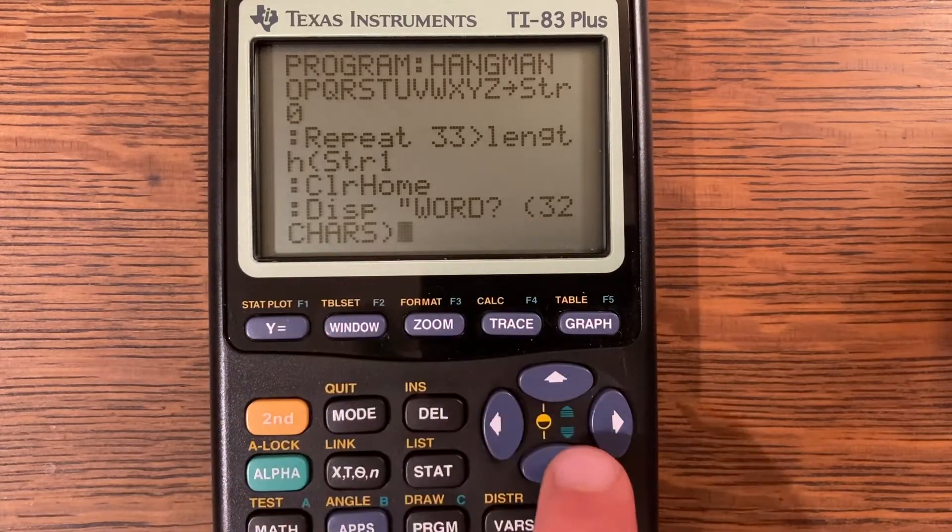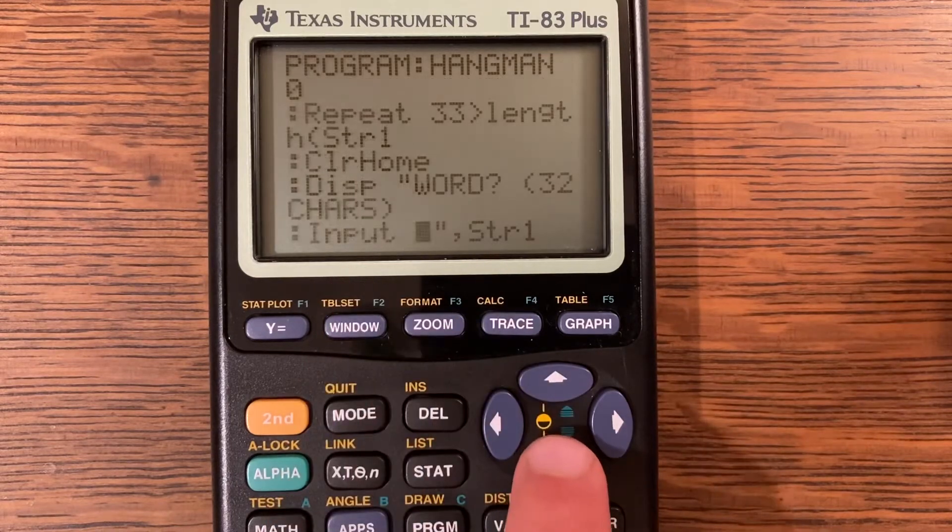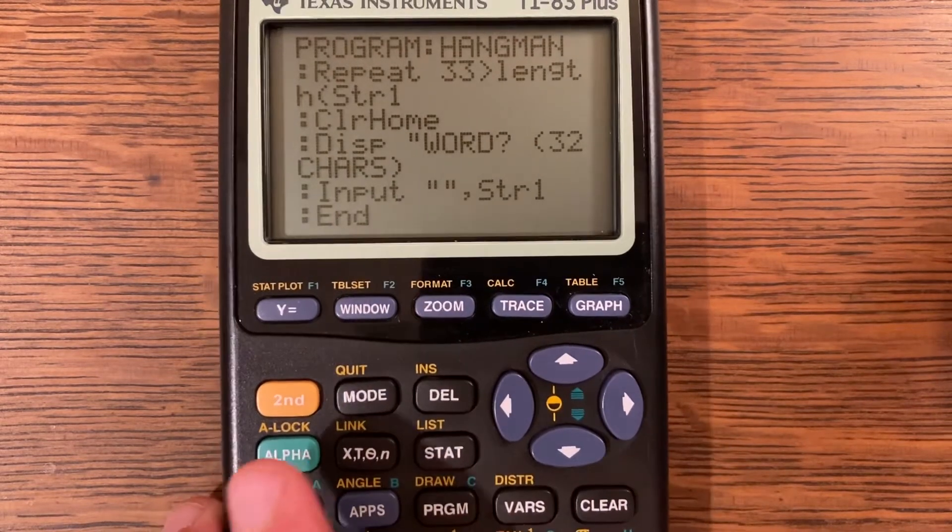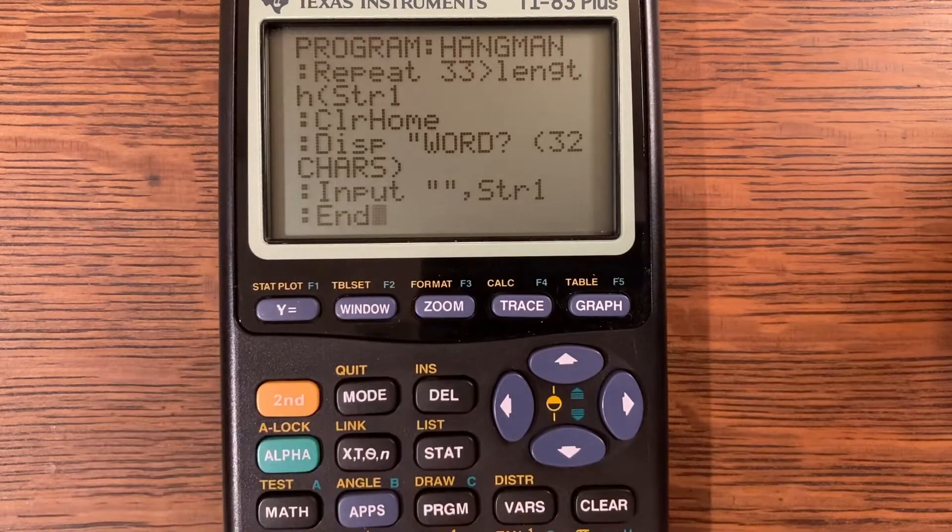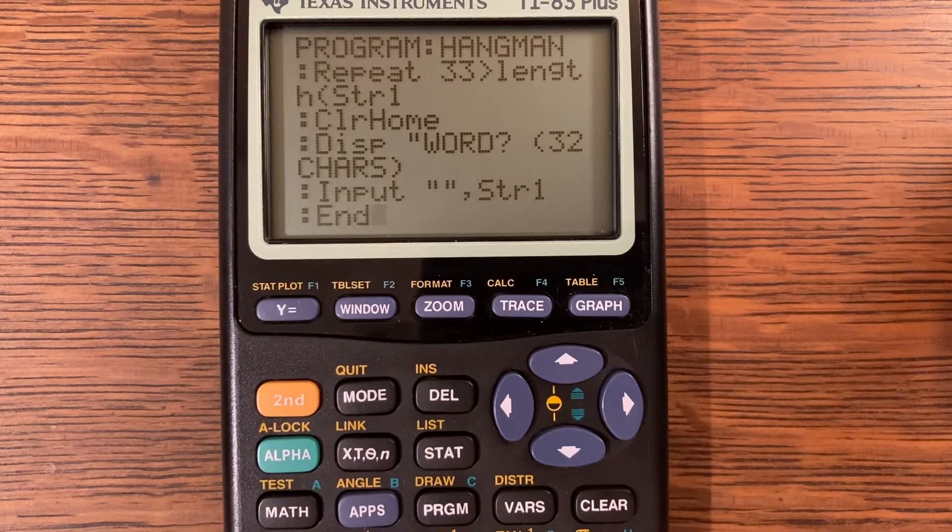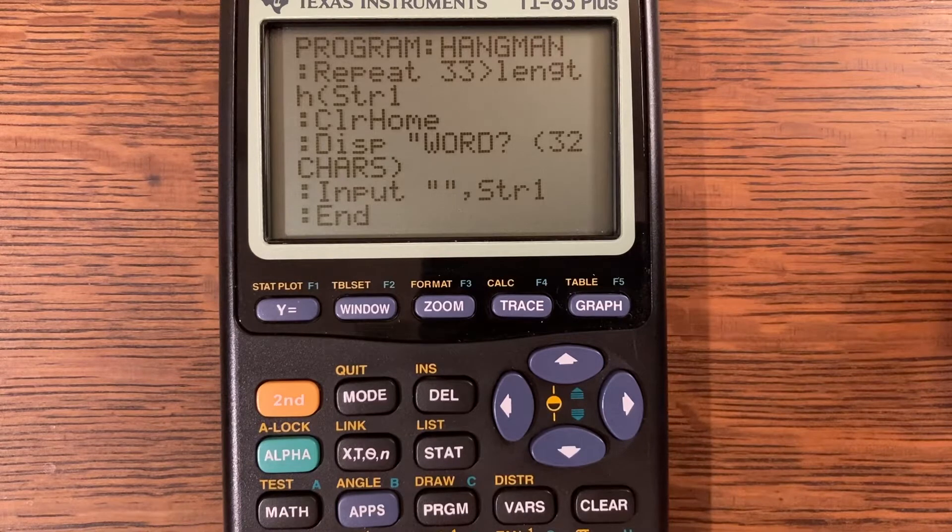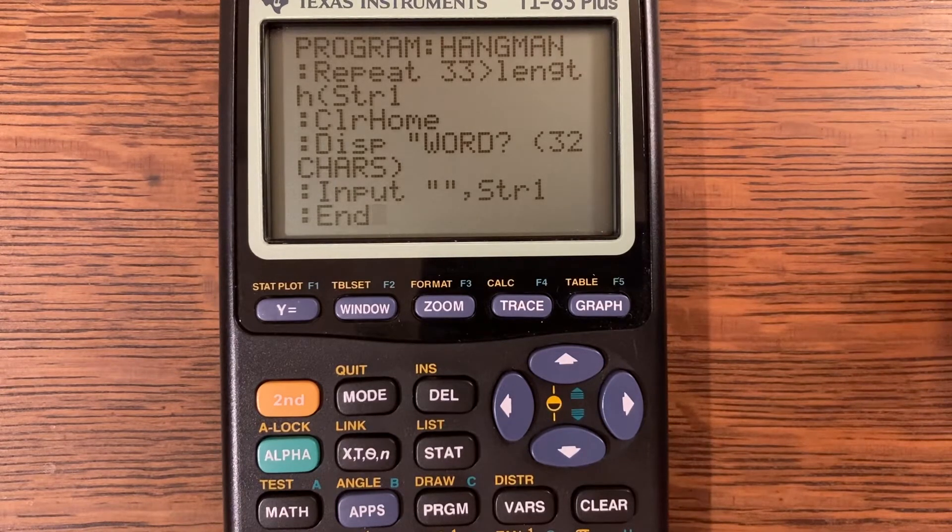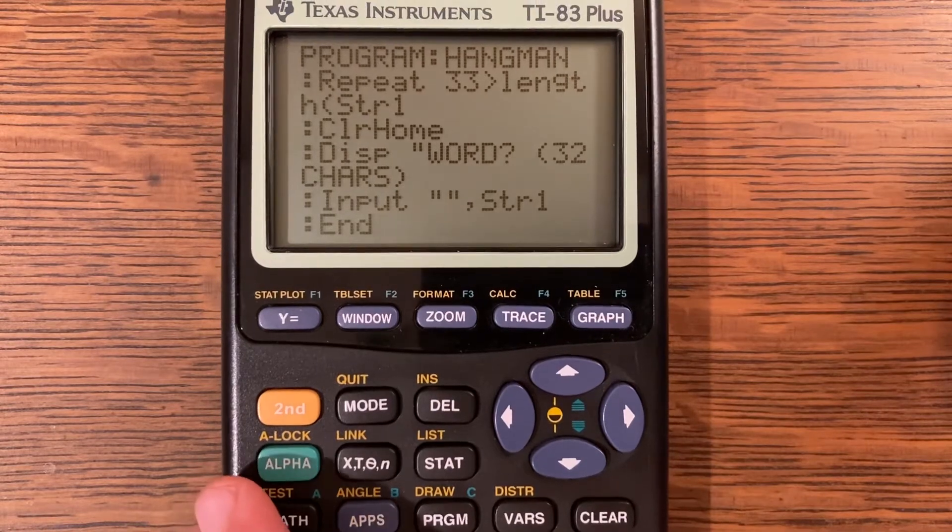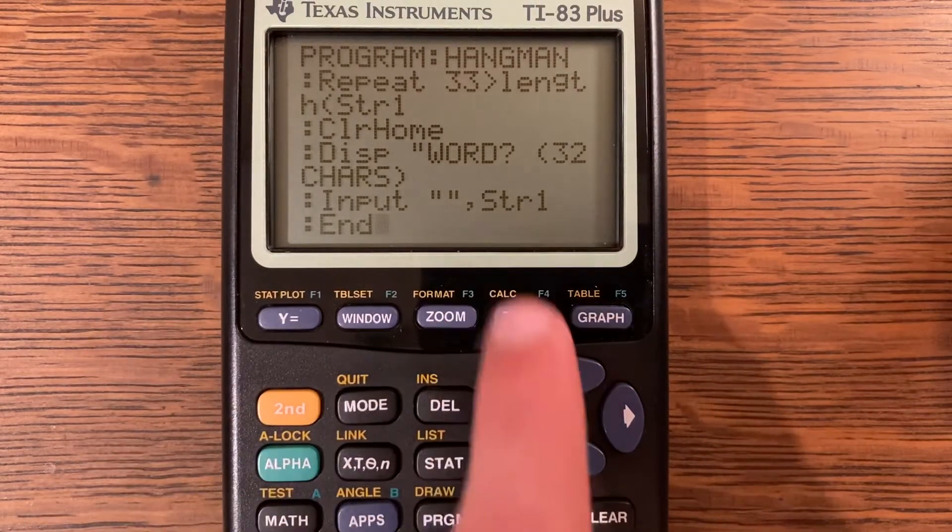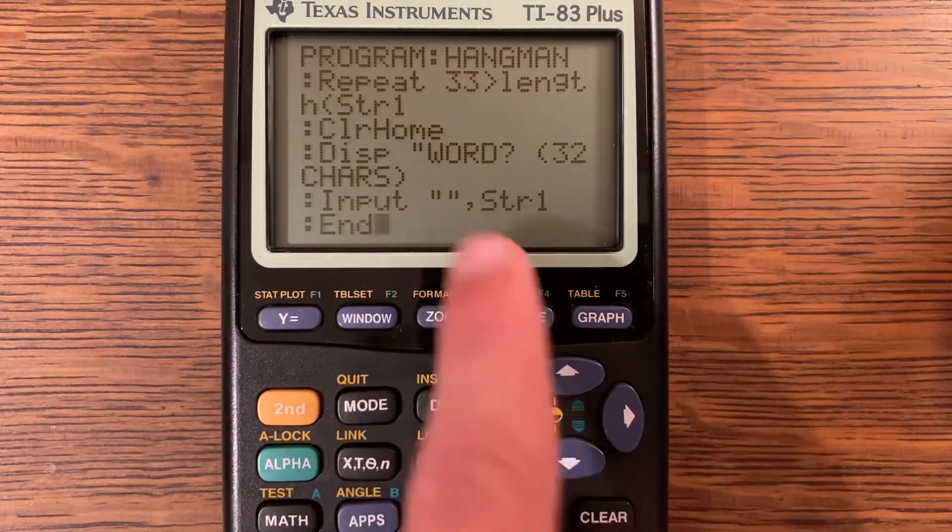Clear home, display quote word a question mark sign here, space a parenthesis and 32 characters. You can spell the whole word out but it does look pretty clean just like that in the parentheses. Input quote quote, which will just give the effect that there's nothing there. If you did like input word, then it would take up a little bit of the screen and it's also easier to see how many characters you have than if you just do nothing like that. Then comma string one because that's what you're inputting to string one.